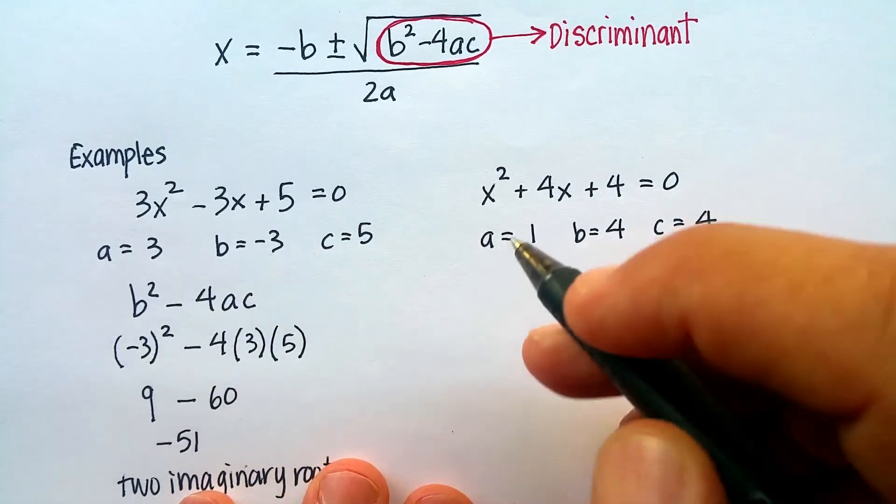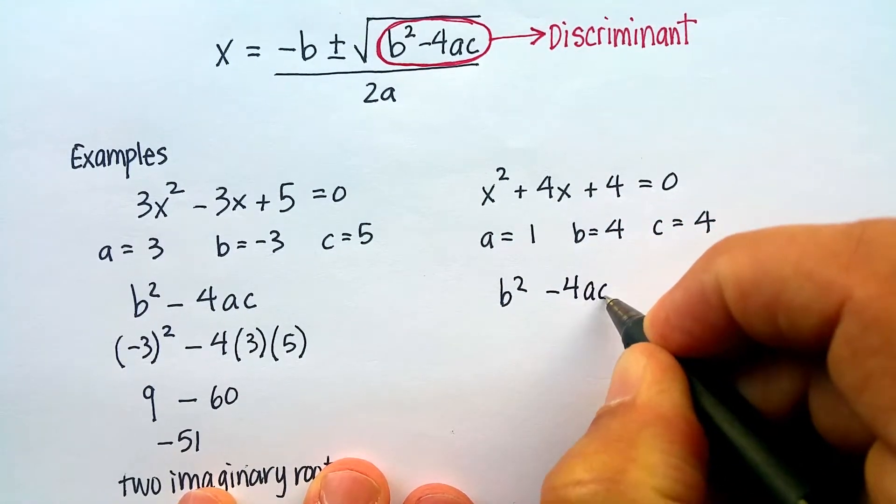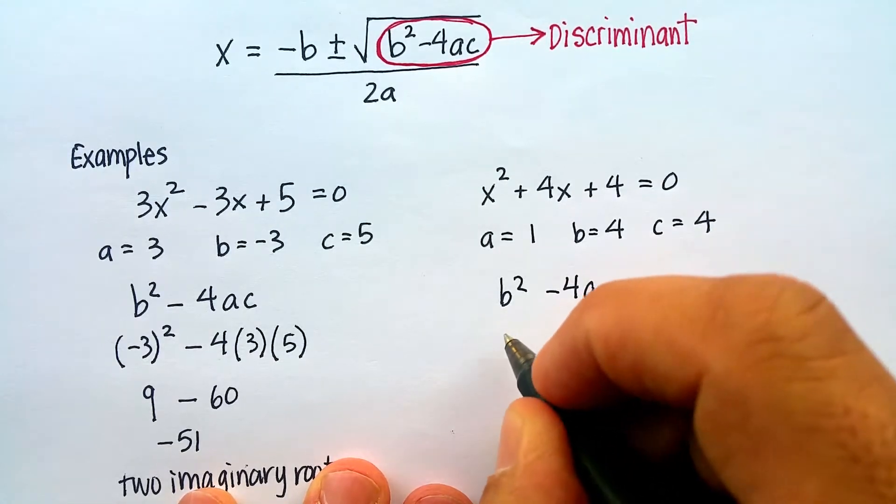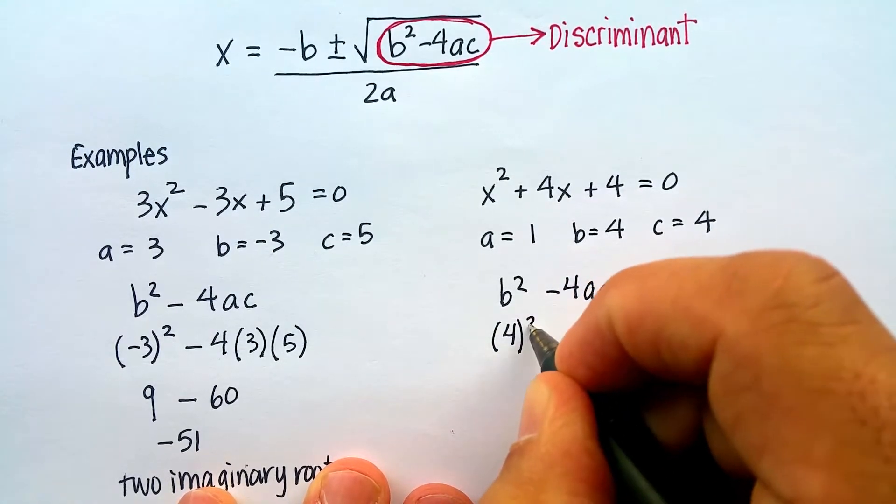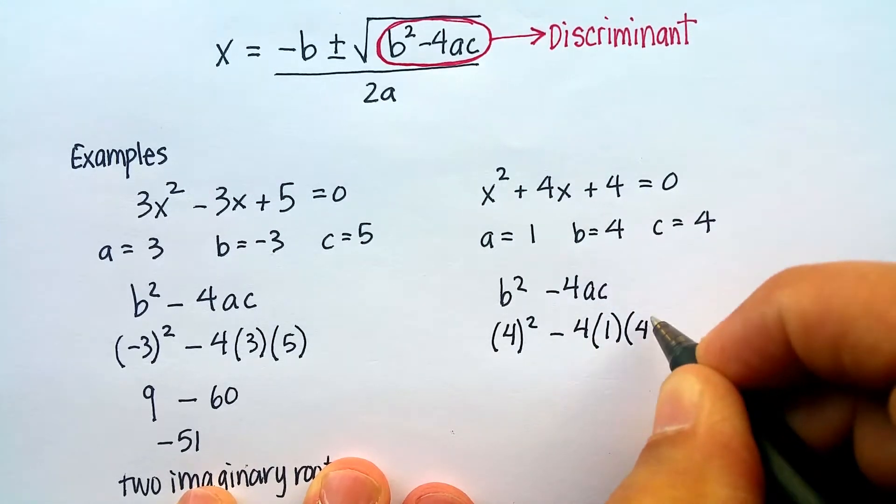Again, let's put it into our discriminant, b squared minus 4 times a times c. My b is 4 squared minus 4 times 1 times 4.